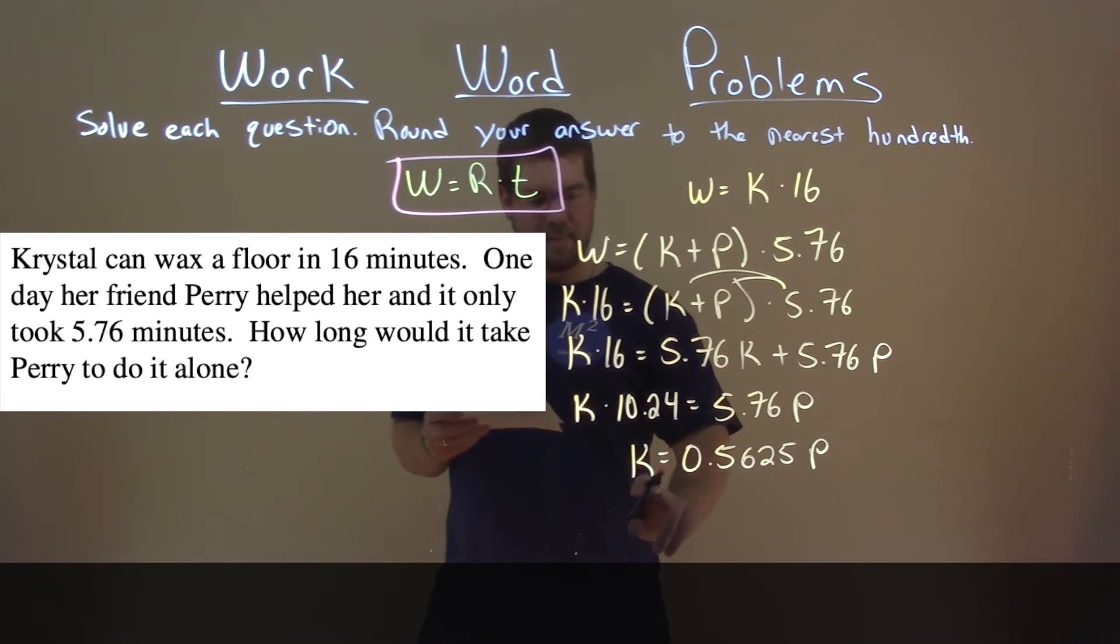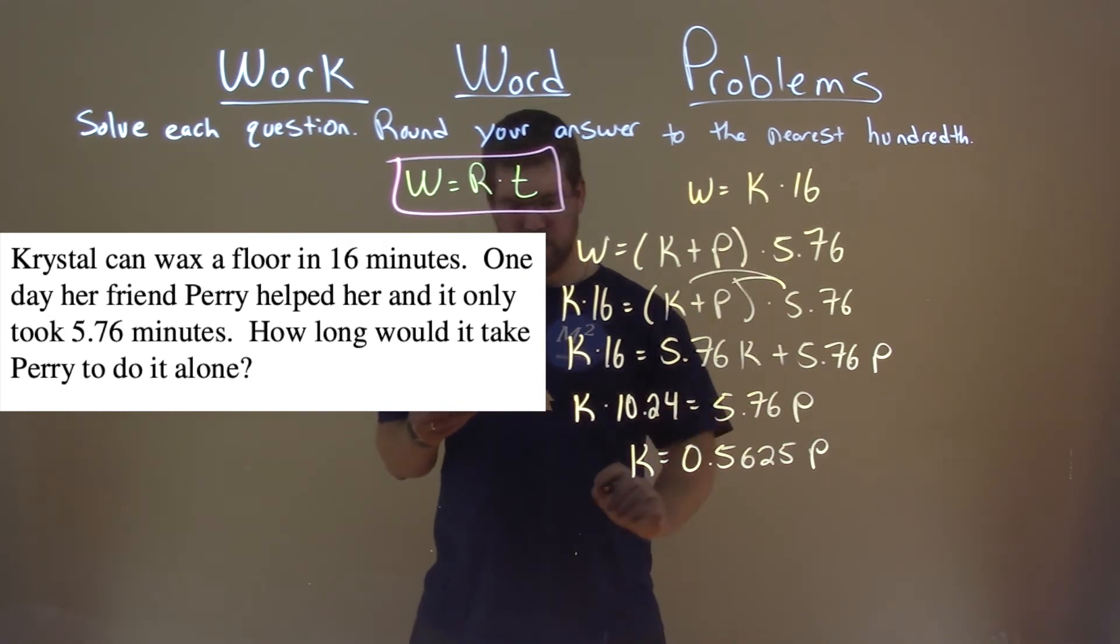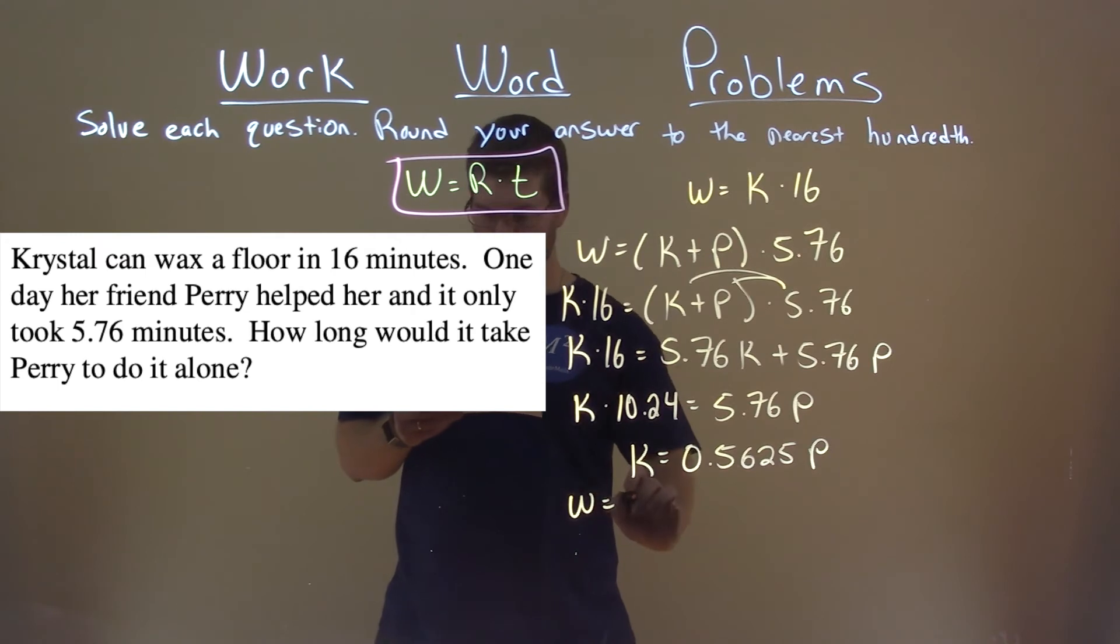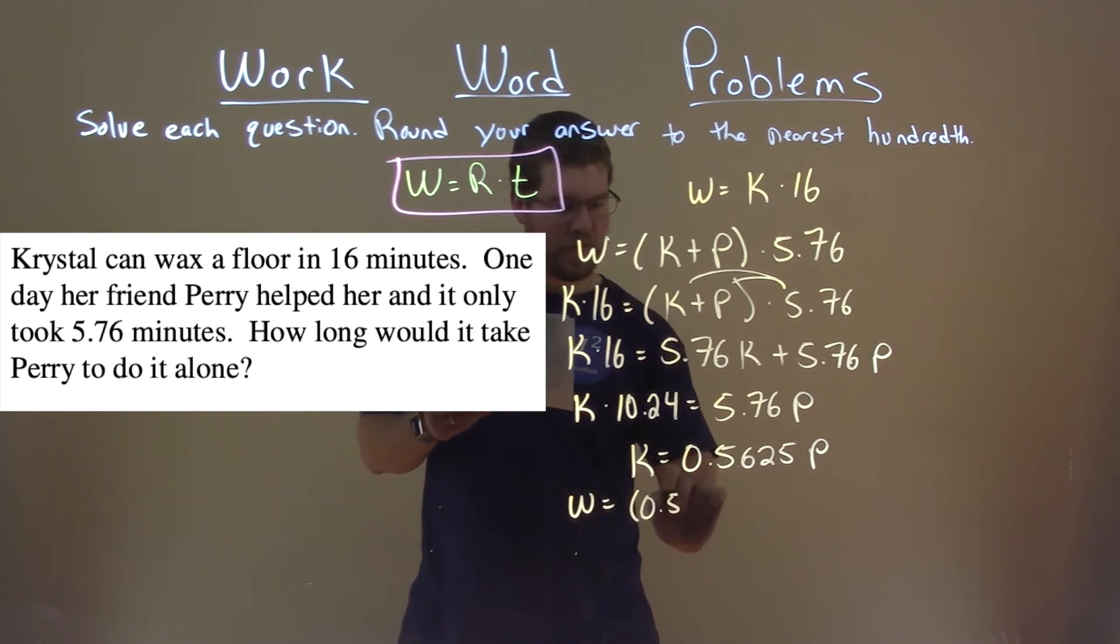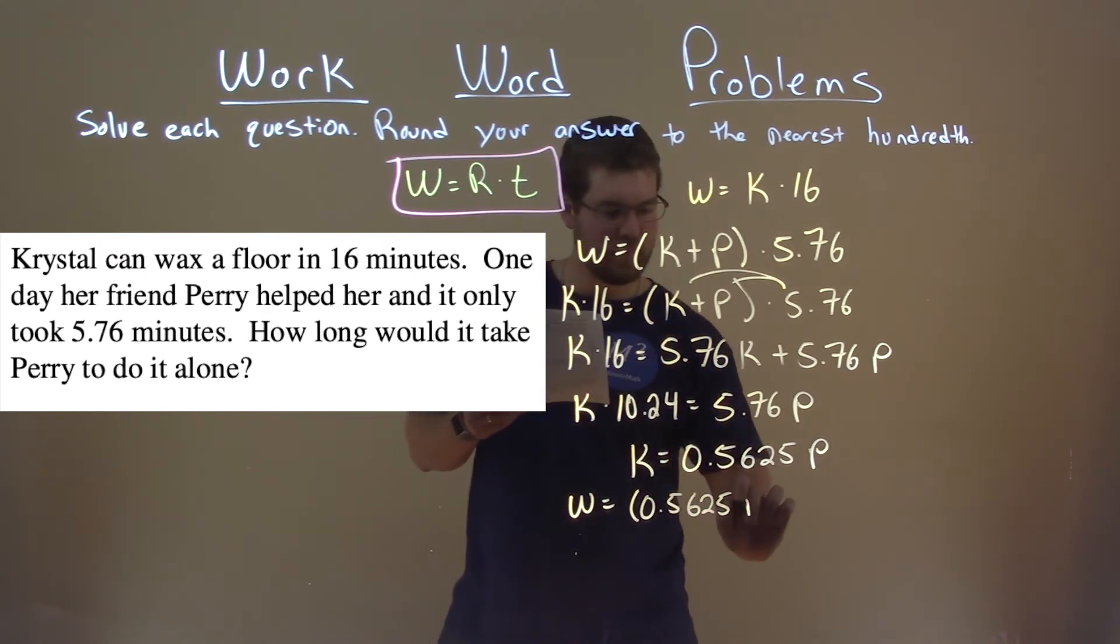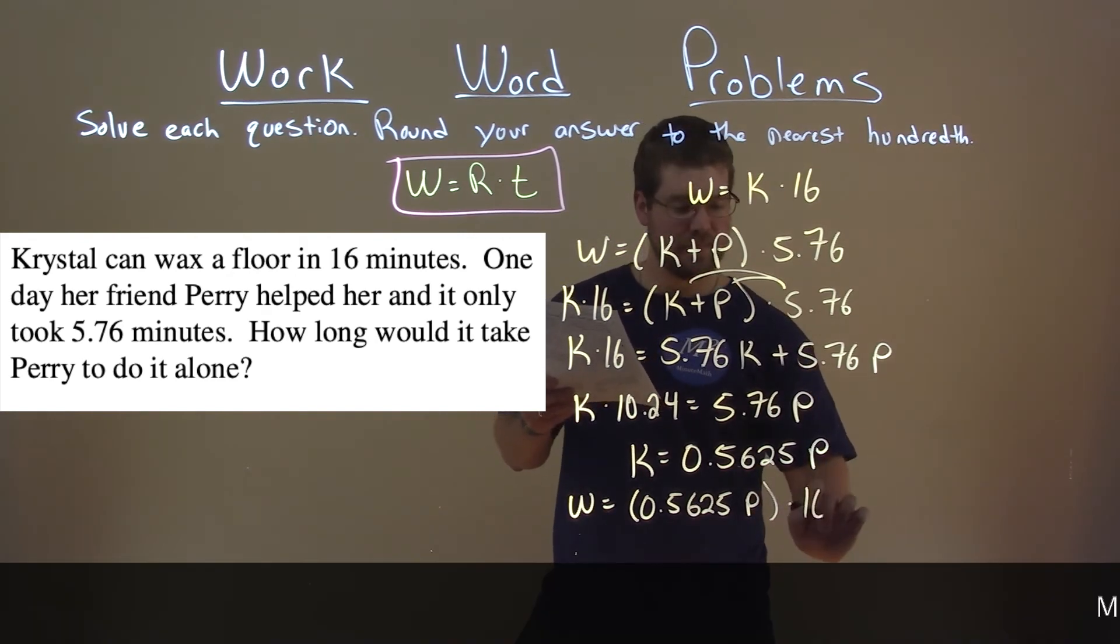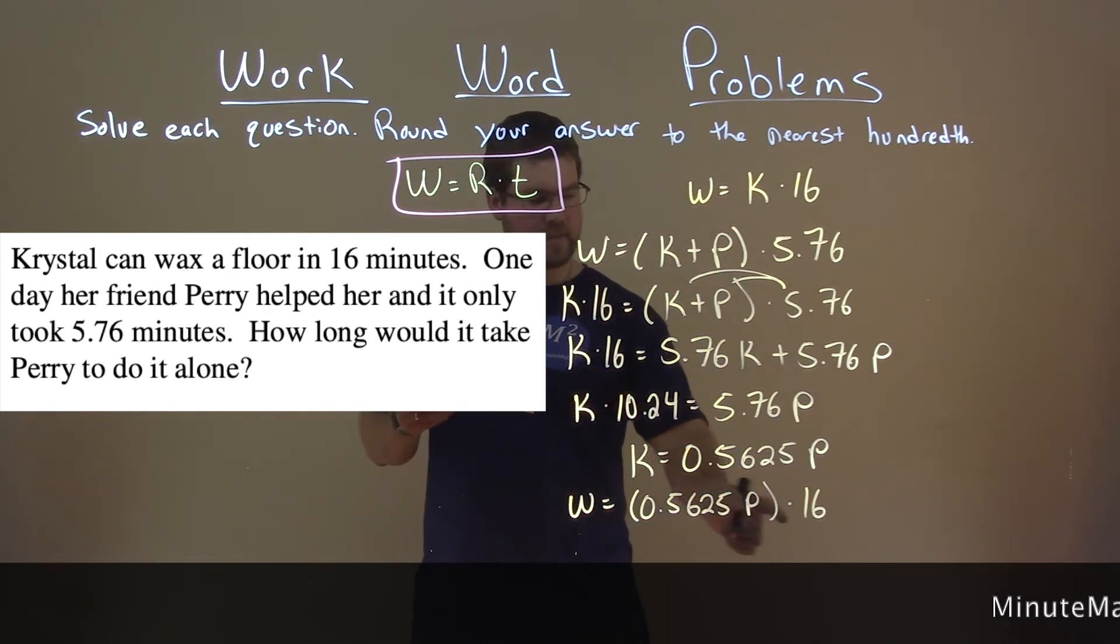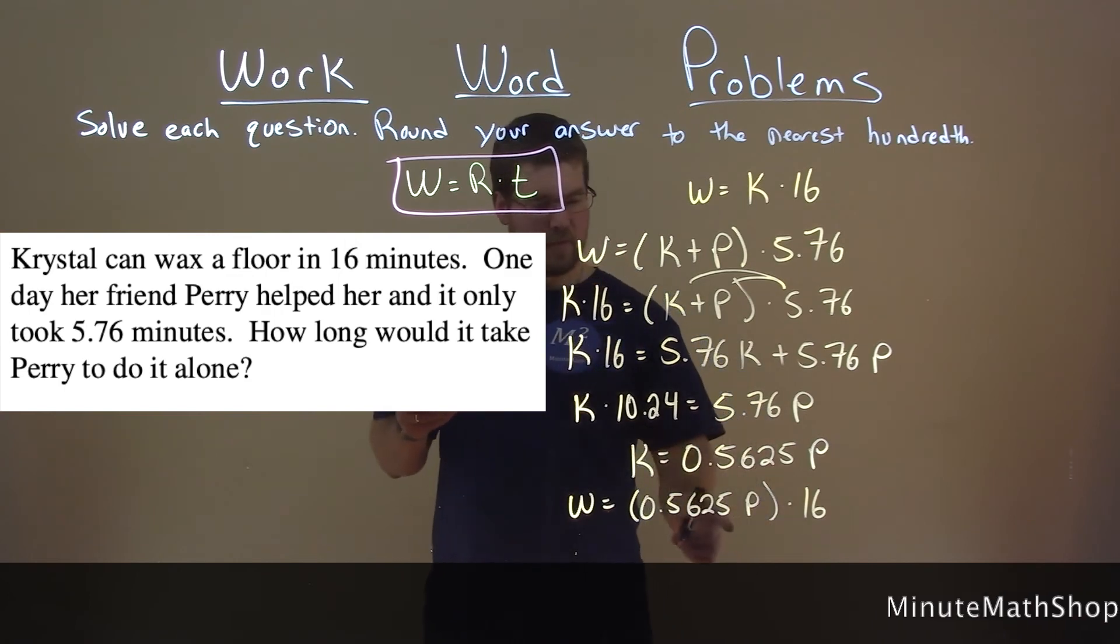Take that k, and we know that's equaled here to this k. So our work is equal to 0.5625p times 16. Multiply this number times 16, and let's rearrange it.